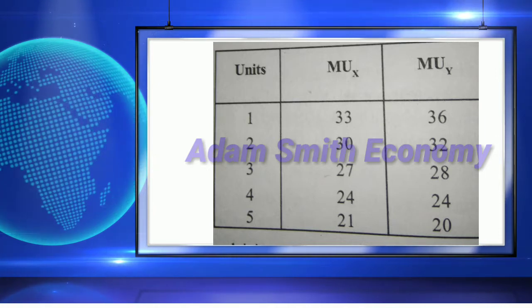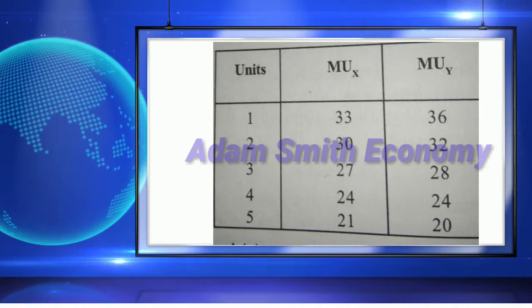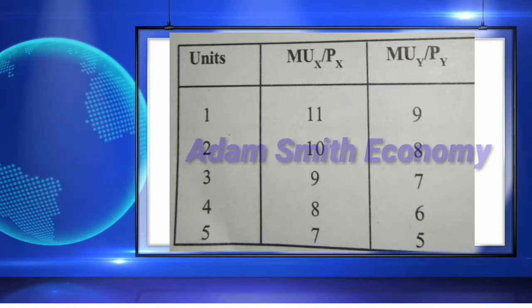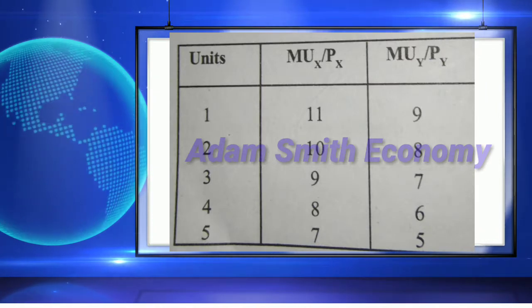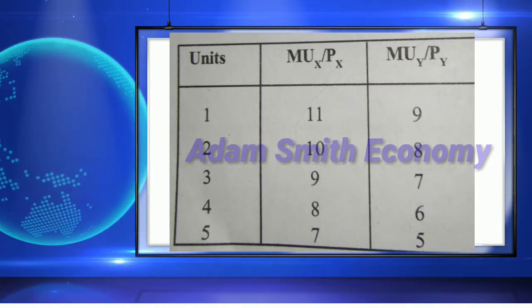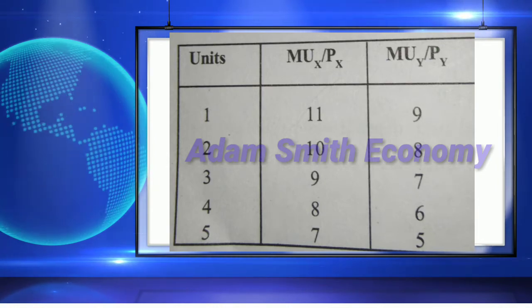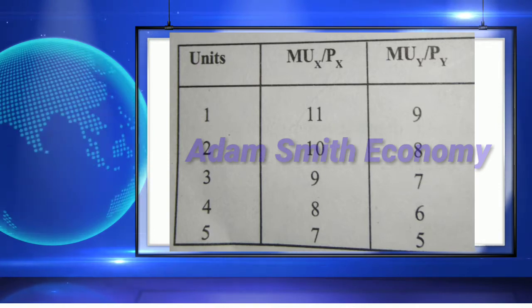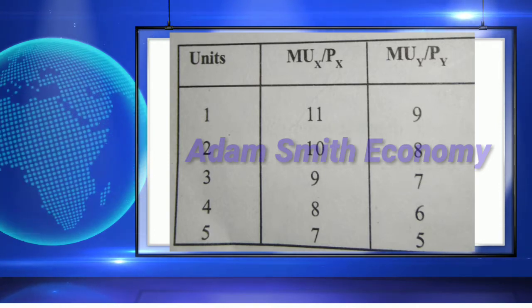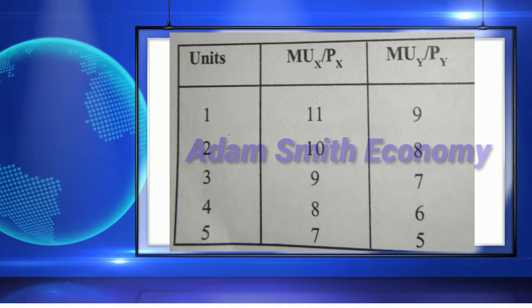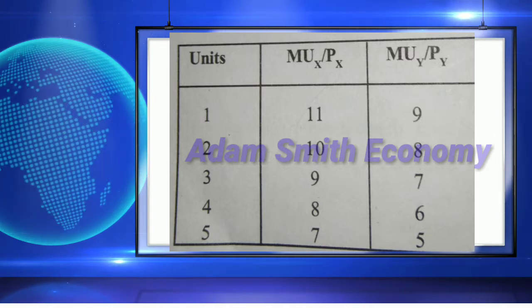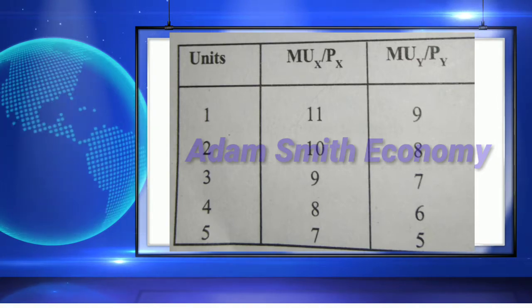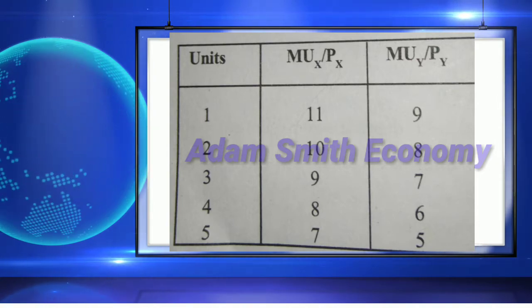Reconstructing the above table by dividing MUx by Rs 3 and MUy by Rs 4, we get marginal utility of expenditure as shown in this picture. The table shows units 1 through 5, with MUx/Px values of 11, 10, 9, 8, 7 and corresponding MUy/Py values.